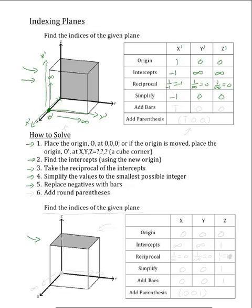Our next step is to replace any negative signs with bars. So negative one will become bar one, and both zero and zero will remain the same. The final step is to add the round parentheses, giving us open parenthesis, bar one, zero, zero, close parenthesis as our final answer. These are the indices of this plane.